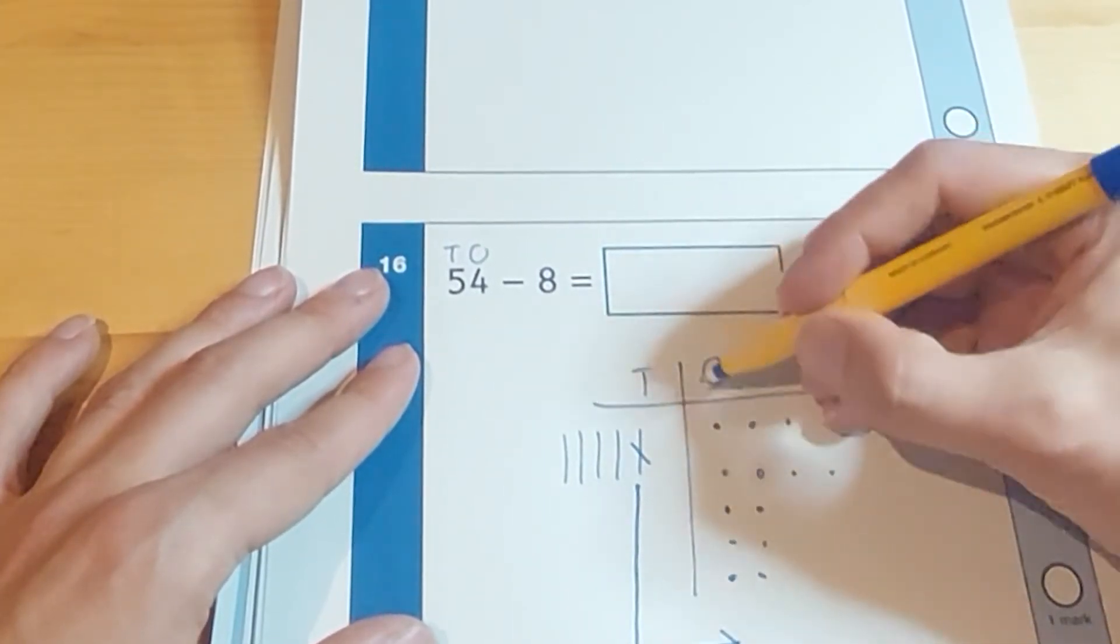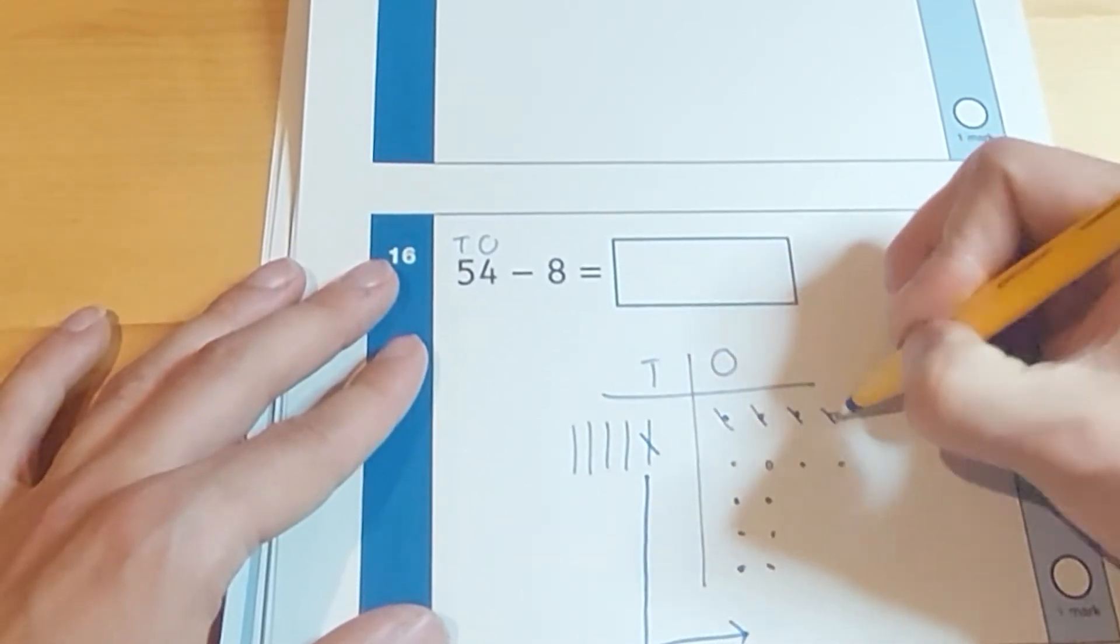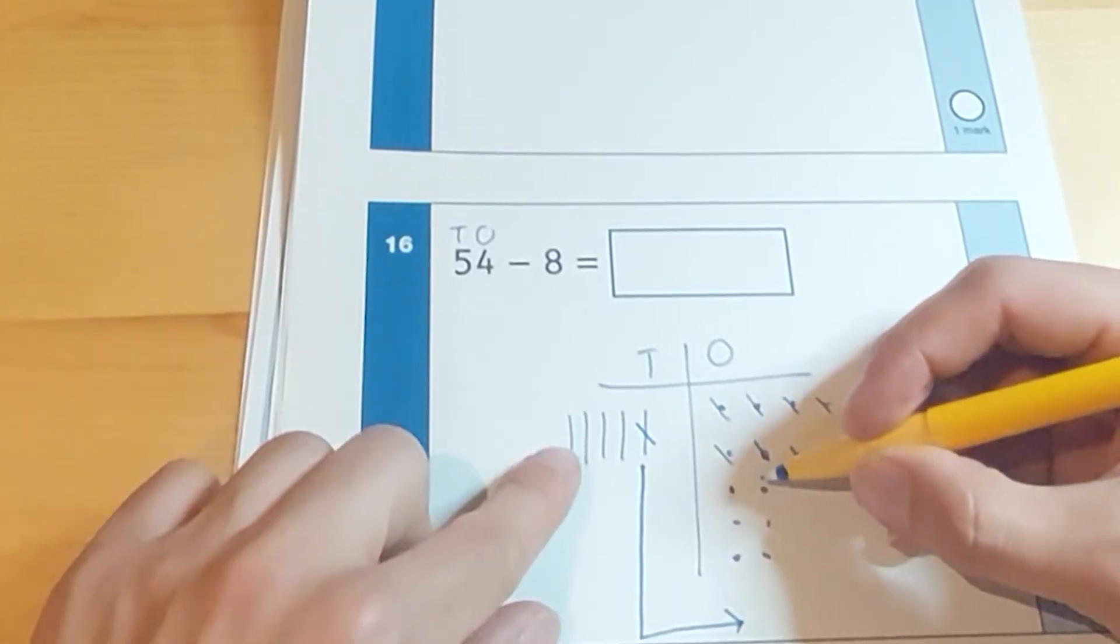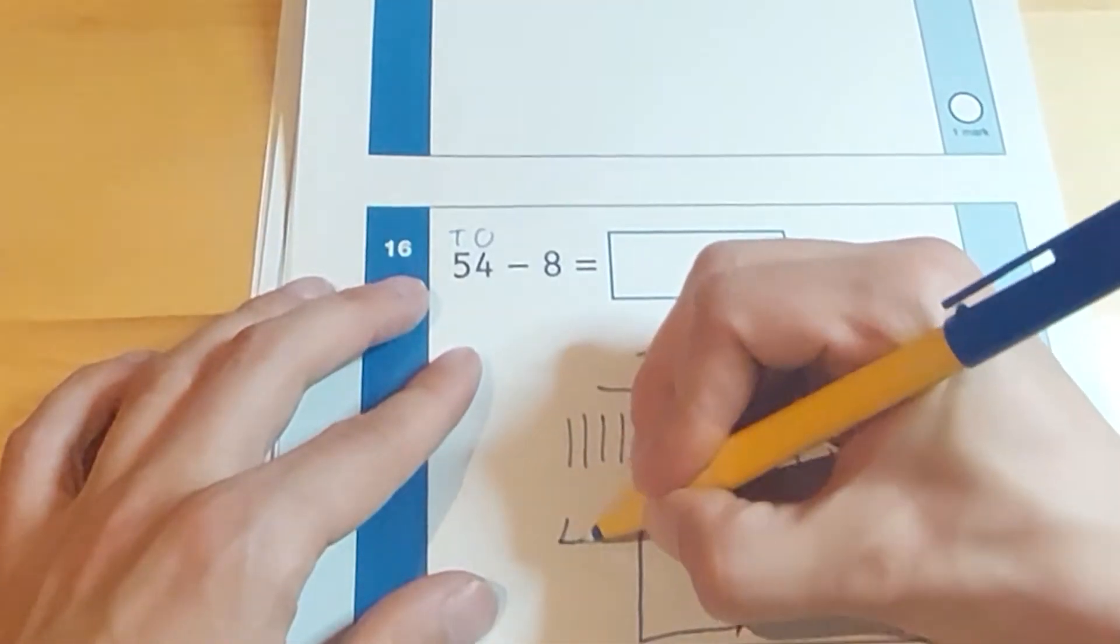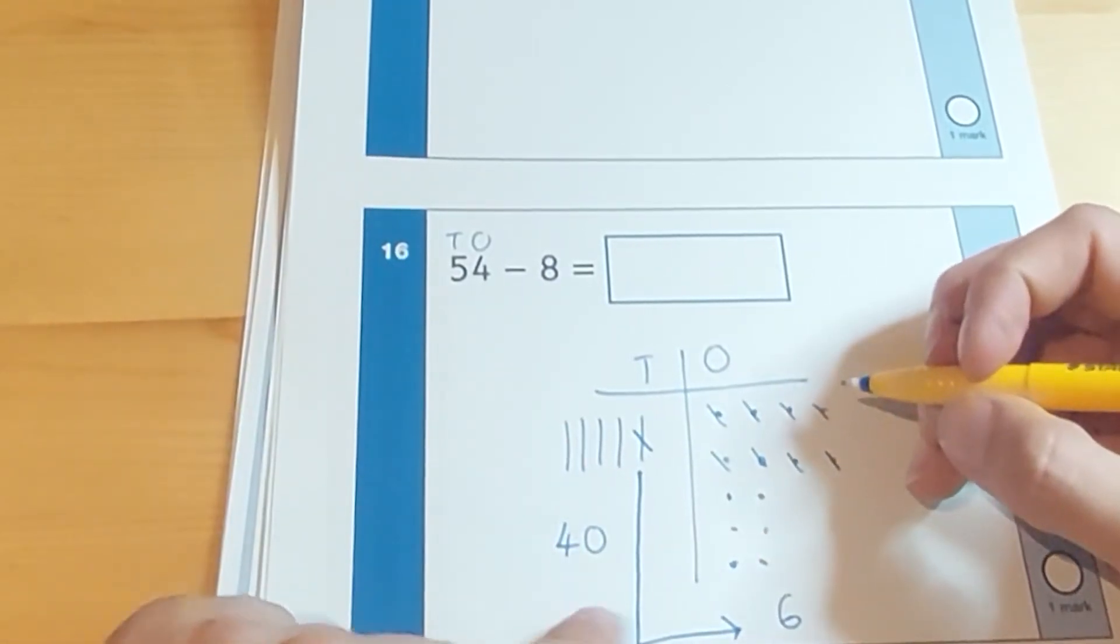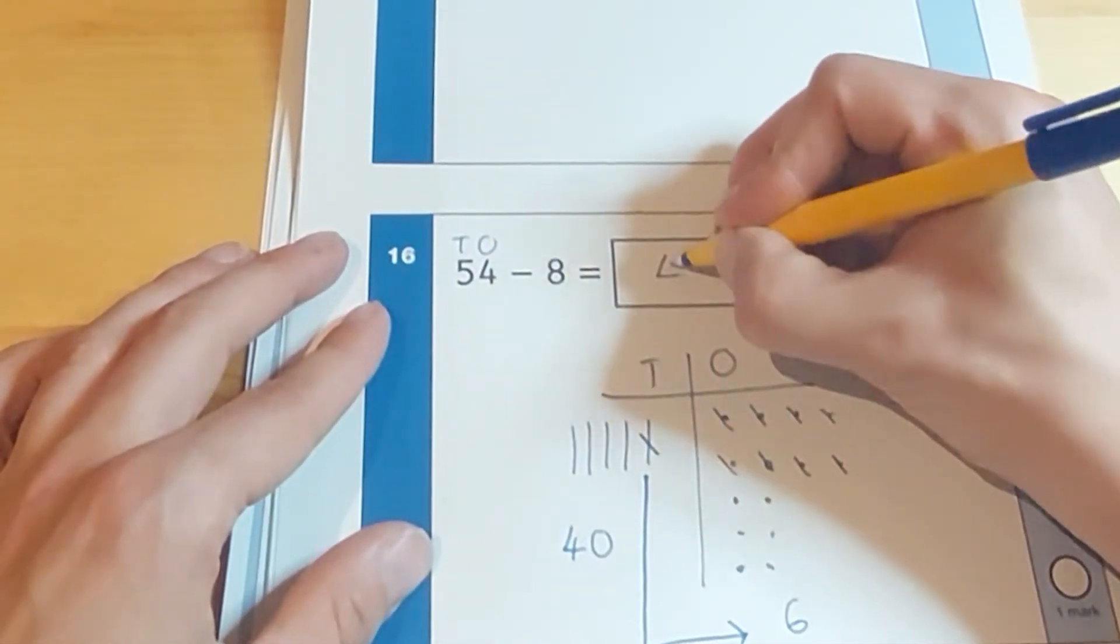Now I can take 8 away. Cross out 8. One, two, three, four, five, six, seven, eight. Leaving me with 10, 20, 30, 40 over here. And over here, leaving with 6. Add those two parts together. 46 makes 46.